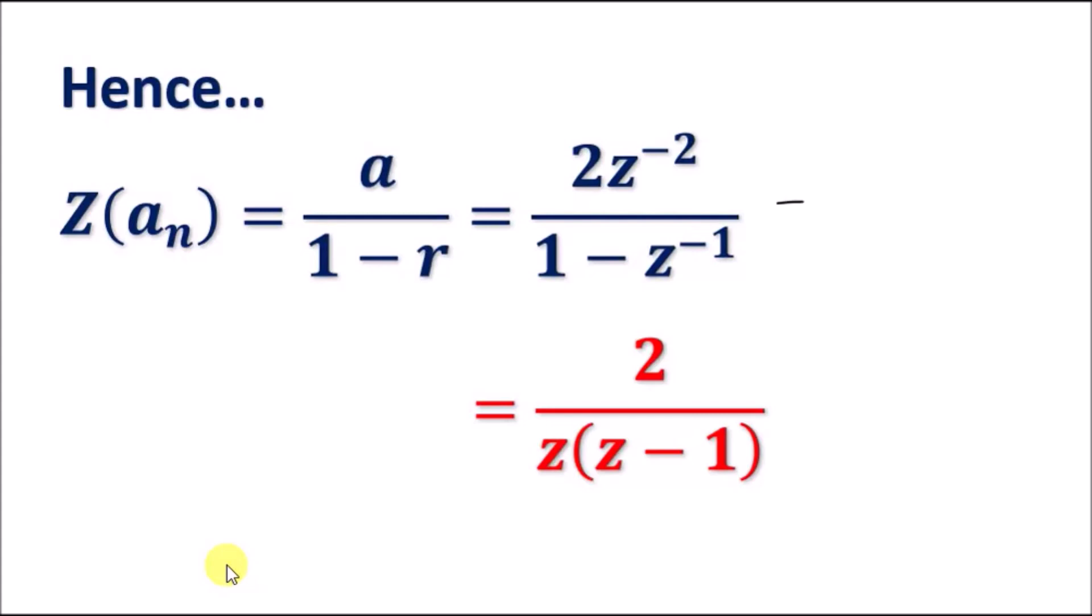This is the same as 2/z^2, and then we're left with 1/(1 - z^(-1)). Multiplying z^2 across: z^2 times 1 is z^2, and z^2 times z^(-1) gives z^1, so you get z^2 minus z. Then factorize z out and you get this result here.